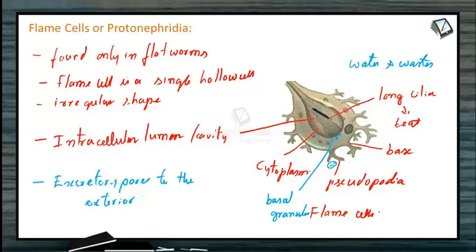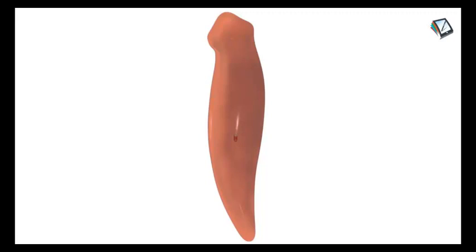Nervous system in flatworms is a primitive type, and it mainly consists of a pair of cerebral ganglia or brain. Here you can see the cerebral ganglia or brain, and three pairs of longitudinal nerve cords.